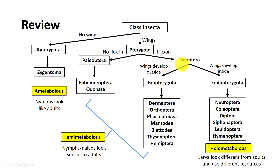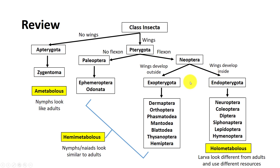The orders are also grouped according to how the wings develop. If the wings develop from structures on the outside of the body, the insect is called an exopterygote. If wings develop from internal wing pads, the insect is called an endopterygote. Be sure you know which orders go with each classification.